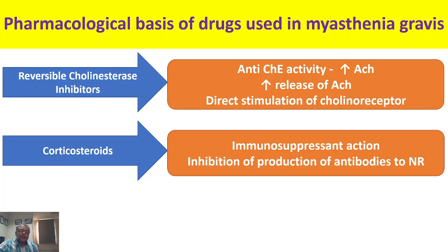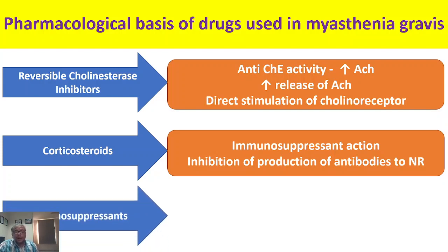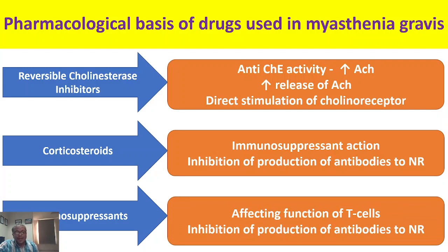At that point, one must use corticosteroids and immunosuppressants. Corticosteroids have two important actions: immunosuppressant and anti-inflammatory. Here, the immunosuppressant action is helpful — corticosteroids inhibit production of antibodies to the nicotinic receptor. However, long-term use of corticosteroids has well-known disadvantages. Immunosuppressants like cyclosporine and azathioprine can also be used; azathioprine has a slower onset compared to cyclosporine. Both work by inhibiting production of antibodies to the nicotinic receptor by affecting T-cell function.